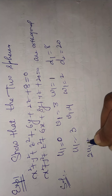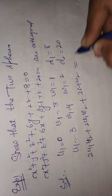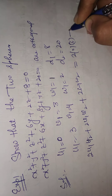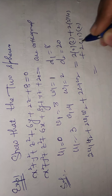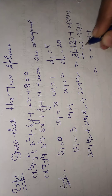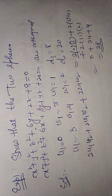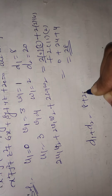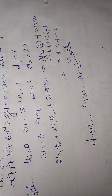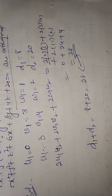Now we compute 2u₁u₂ + 2v₁v₂ + 2w₁w₂ = 2(0)(3) + 2(3)(4) + 2(1)(2) = 0 + 24 + 4 = 28. The right-hand side is d₁ + d₂ = 8 + 20 = 28. Both sides are equal, so the condition of orthogonality is verified. Therefore the two spheres are cutting orthogonally. Very simple question.